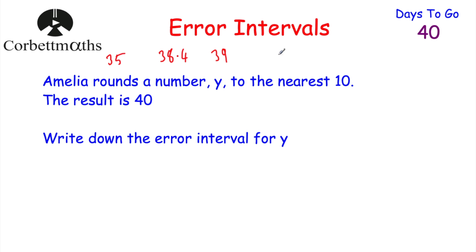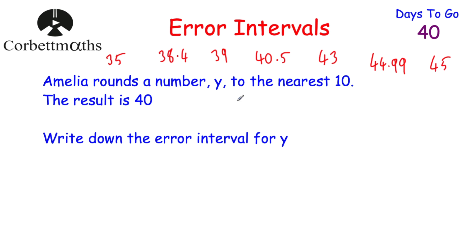In terms of numbers bigger than 40 that round down to 40 to the nearest 10: it could be 40.5, 43, or even 44.99 — all of those round to 40. But it couldn't be 45; it could be anything up to but not including 45. So Y would have to be bigger than or equal to 35, but less than 45. That's the error interval for Y.